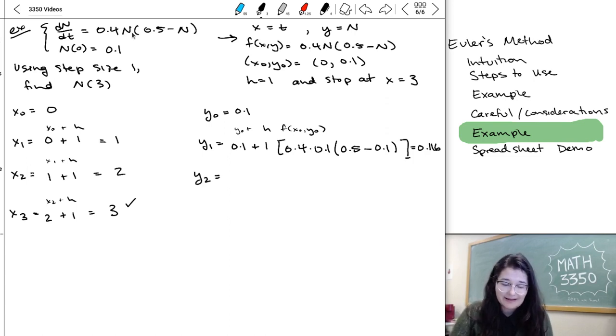Then I go ahead and I do y2, which is going to be, now I look back at x1, y1. I take y1 plus h, f of x1, y1. So y1 was 0.116. h, at least, was 1, so that's nice. And then my f of x1, y1 is this, but everywhere I see n,